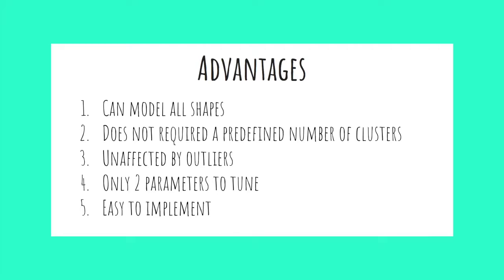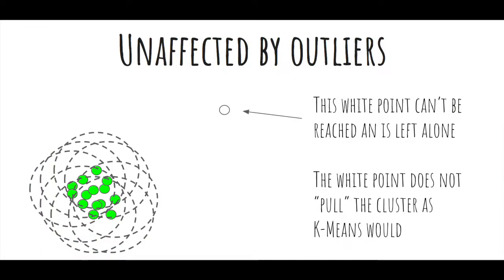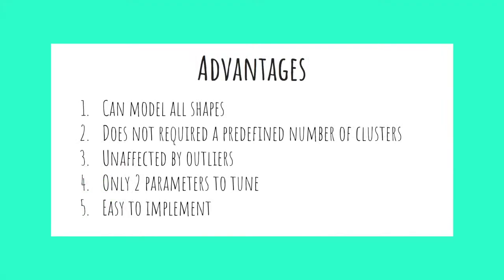Third, DBSCAN is unaffected by outliers. Because DBSCAN works through a distance parameter, a data point is either within that distance or it is not. Fourth, there are only two parameters to tune, making it easy to work with. And finally, it is super easy to implement using libraries such as sklearn.